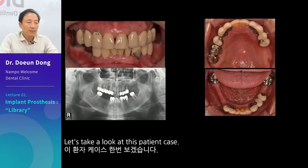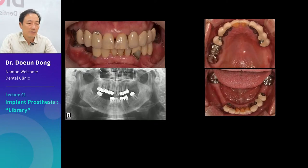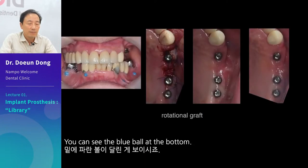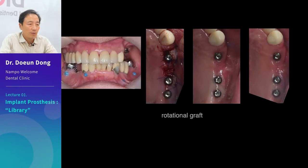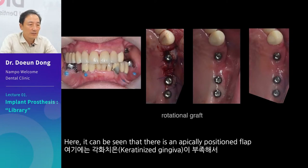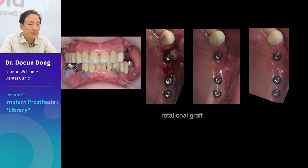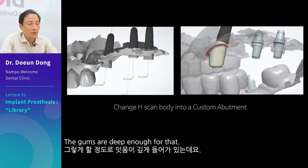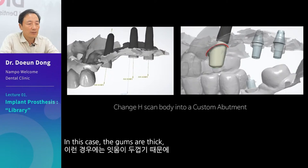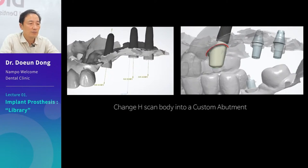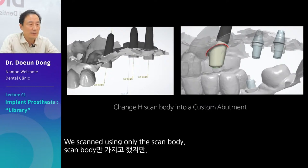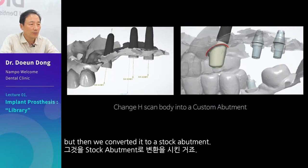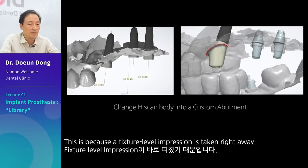Let's take a look at this patient case. This is the initial state. You can see the blue ball at the bottom — we use this blue ball as a matching point. The patient had an implant in the upper jaw, and there is an apically positioned flap due to a lack of keratinized gingiva. The gums are deep and thick, so we will want to use a custom abutment. We scanned using only the H-scan body and then converted it to a stock abutment, because a fixture level impression is taken right away.